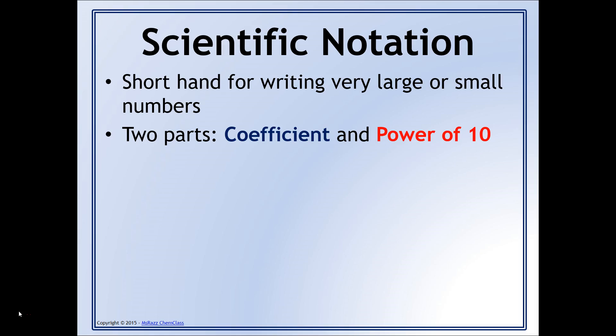There are two parts to every scientific notation. There's the coefficient and power of 10. The coefficient is always going to be a number between 1 and 10. It can include 1, but not 10. What that means is that you are never going to have a number that's going to be anything greater than 9.9999 repeating. If you did, then you would have to move the decimal over 1, and you'll see what I'm talking about in a minute.